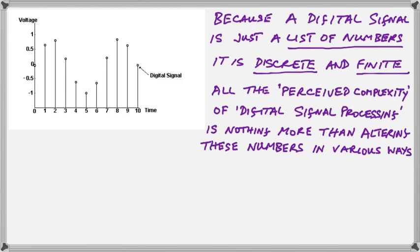Now, all the perceived complexity of digital signal processing is nothing more than altering these numbers in various ways. Basically, we merely process our list of numbers using some kind of mathematical algorithm to turn them into another set of numbers, and that is all we do.